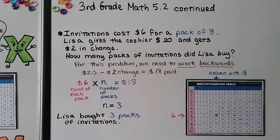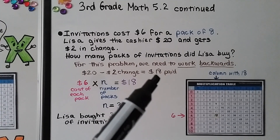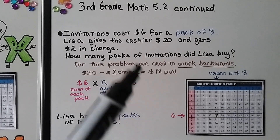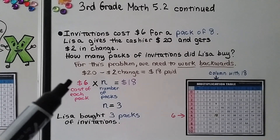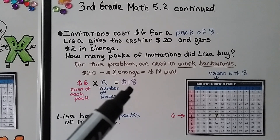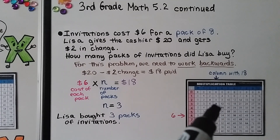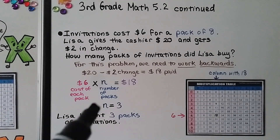Invitations cost $6 for a pack of 8. Lisa gives the cashier $20 and gets $2 in change. How many packs of invitations did Lisa buy? For this problem we need to work backwards. First, find $20 minus $2 to know how much she paid: that's $18. So $6 per pack times N is equal to $18. Going across the row for 6 to 18, then up the column, we see it's a 3. So N is equal to 3 — Lisa bought 3 packs.